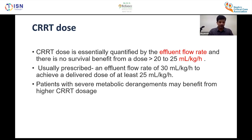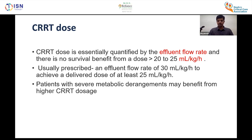CRRT dose is quantified by effluent flow. There is no survival benefit if you exceed more than 20–25 ml/kg/hour. Usually, a prescribed effluent flow rate of 30 ml/kg/hour is used to achieve a delivered dose of approximately 25 ml/kg/hour. Patients with severe metabolic derangements may benefit from higher doses, so dose can be adjusted depending on the clinical condition.